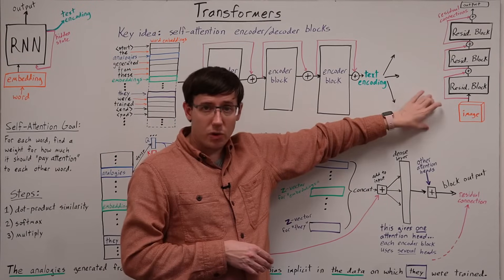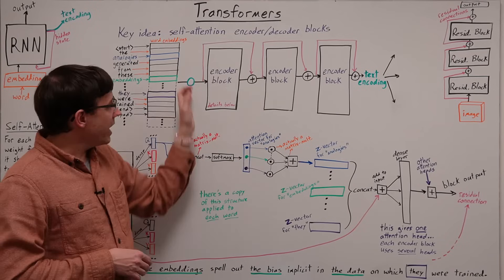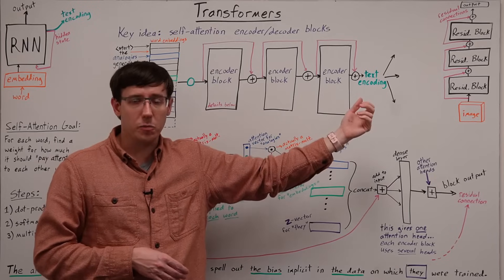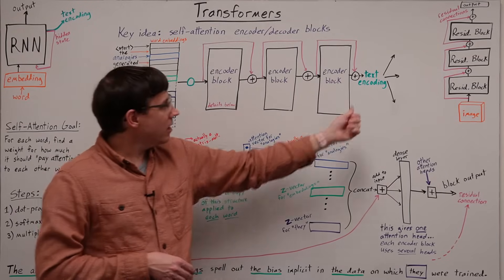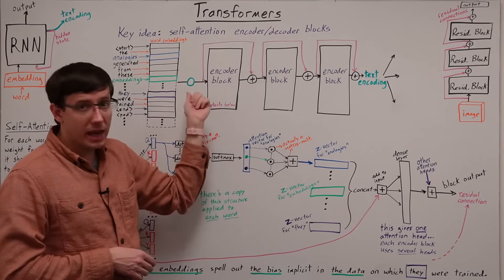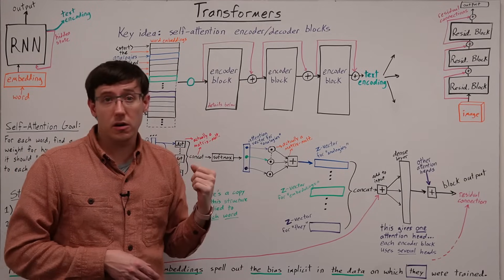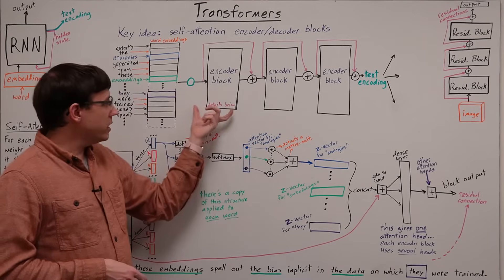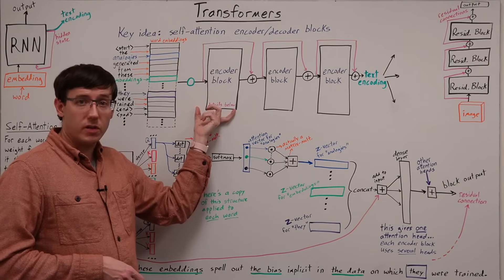But from residual networks, the transformer inherits skip connections that mean each block only needs to augment its predecessors, and that gradients can propagate quickly through even a large network. But to do text processing, we need a very different sort of architecture within the blocks.